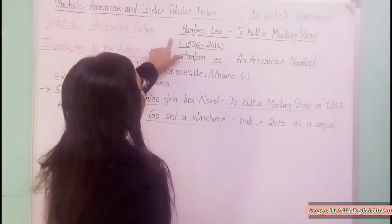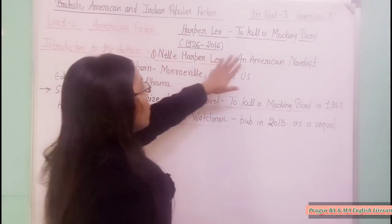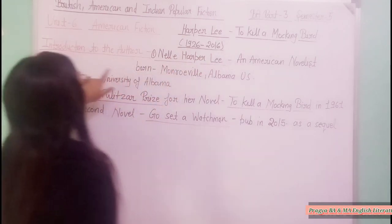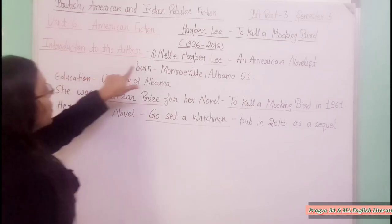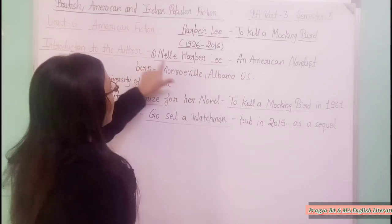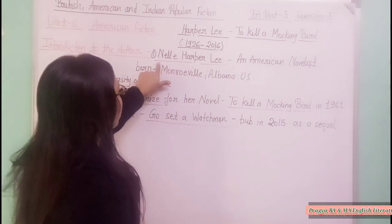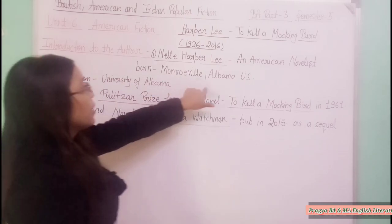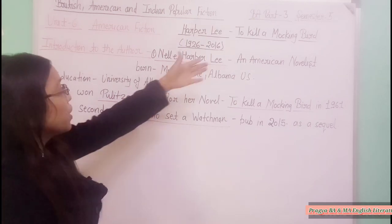First of all, we will introduce Harper Lee. Harper Lee is an American novelist. Her time duration is from 1926 to 2016. Her complete name is Neely Harper Lee — Neely was her grandmother's name. She was born in Monroeville, Alabama, U.S. Her education is from the Institute of Alabama.